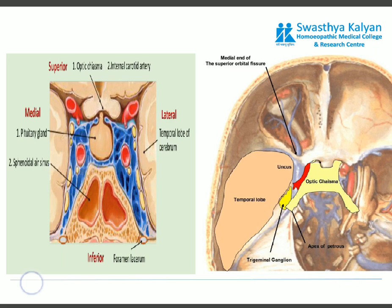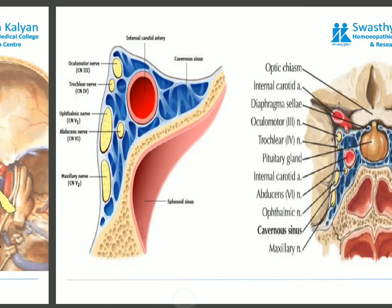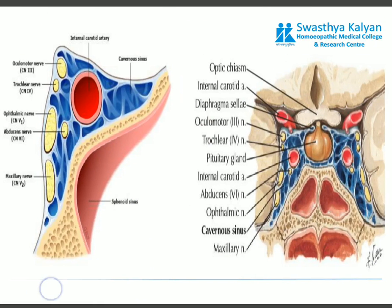Inferiorly, below the cavernous sinus, there is the foramen lacerum. Laterally, the cavernous sinus is related with the temporal lobe of the brain. The lateral wall of the sinus has some important structures within it from above downwards: the oculomotor nerve, the trochlear nerve, the ophthalmic nerve, the maxillary nerve, and it is also related with the internal carotid artery and the abducent nerve.